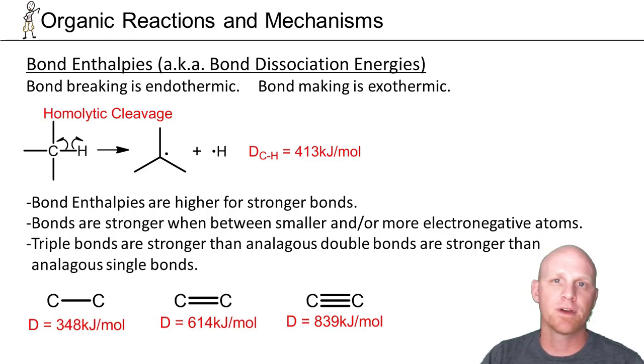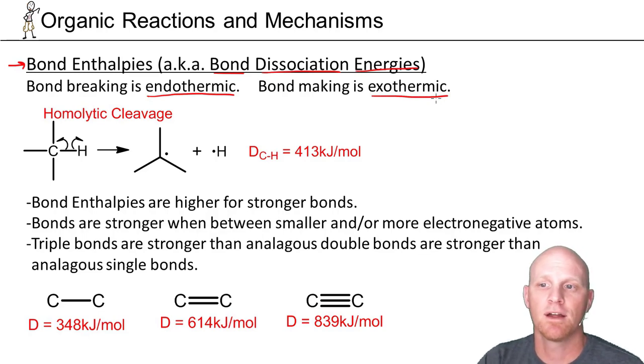When talking about the enthalpy of a reaction, a useful tool, we often address what are known as bond enthalpies, or sometimes bond dissociation energies. That last phrase, bond dissociation energies, talks about what it is. It's the energy it takes to break a bond. It turns out it is endothermic. It costs energy to break a bond. But it is exothermic. It releases energy when you make a bond. And so the overall balance of making and breaking bonds will let you approximate delta H of a reaction.